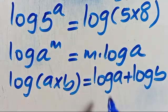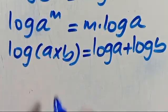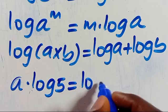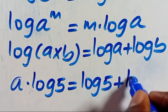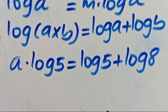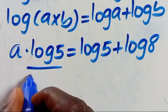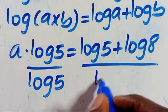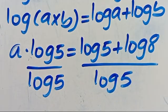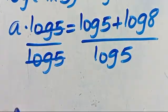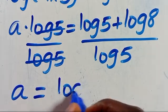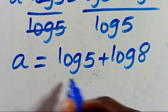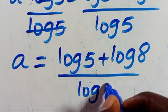When we apply log here, this power will come down to the base. So here we will have A times log 5 equals log 5 plus log 8. So let's divide through by log 5 — this will cancel out. We have A equals log 5 plus log 8, all divided by log 5.